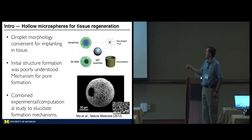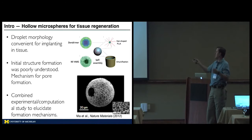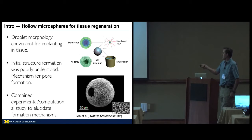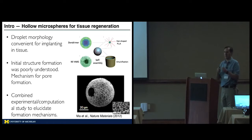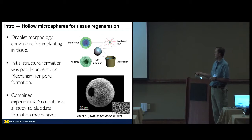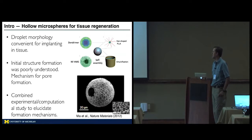First they make a dendrimer, and then they polymerize polylactic acid on that, and they get this star polymer coming out of a dendrimer core. They emulsify it, and then they get these micron size droplets — that's a double emulsion — and some of them have pores and some of them don't. They use these for tissue regeneration in dentistry.